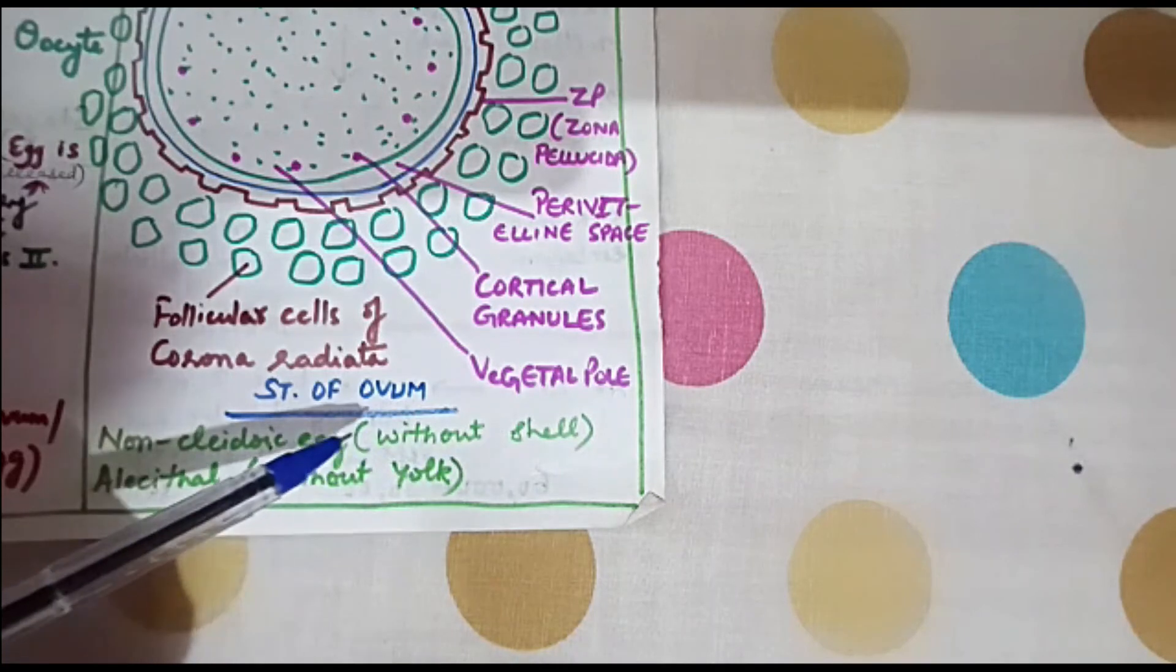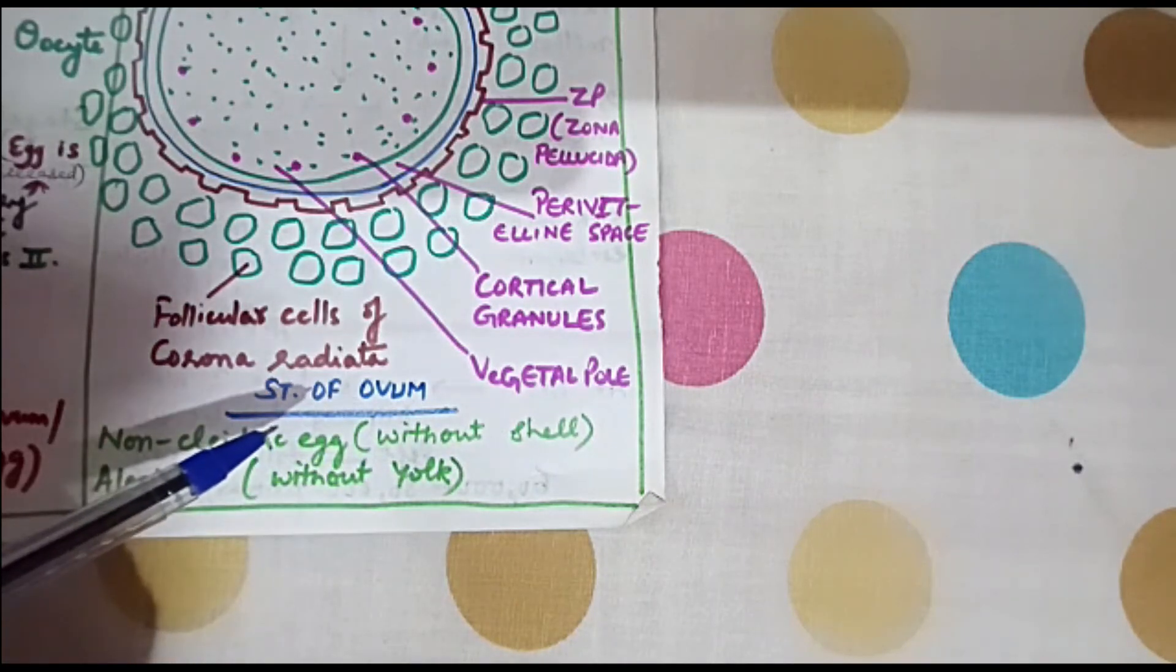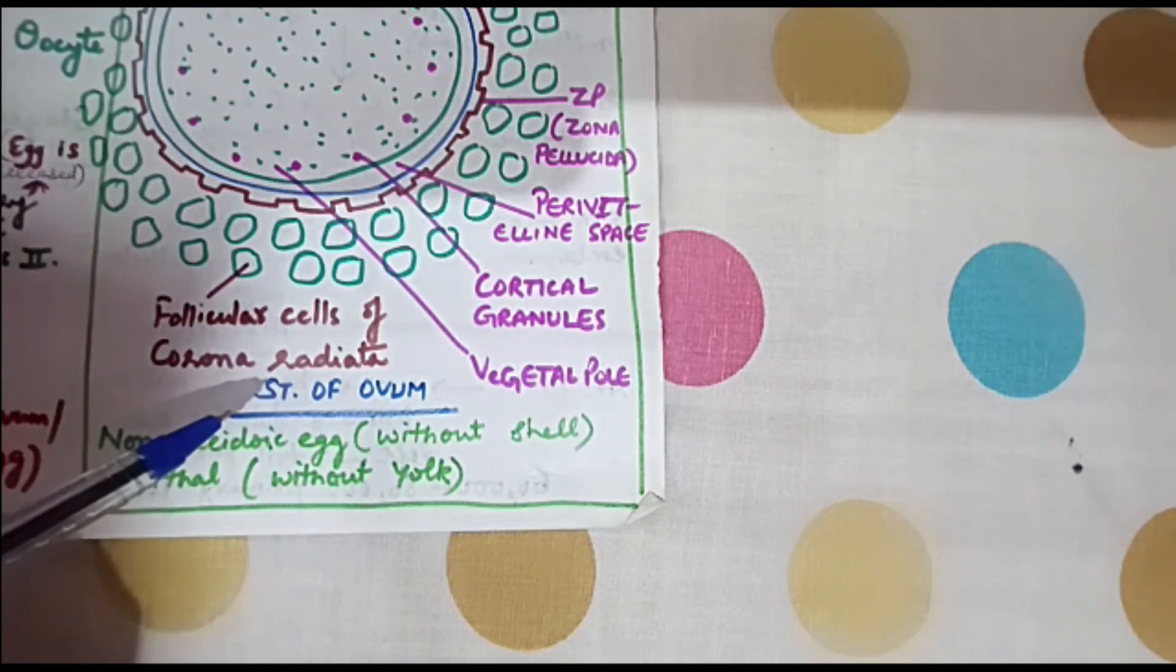The eggs of other animals like birds have shells from the outer side. Such eggs are known as cleidoic eggs, but the human egg is non-cleidoic egg.